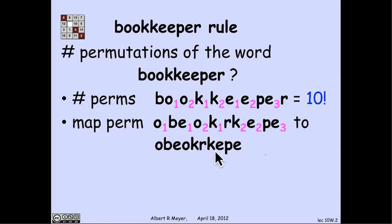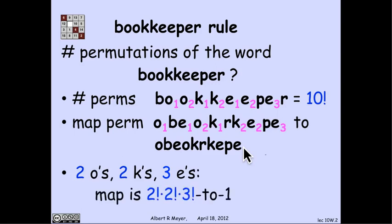Subscripts on the e's don't matter. Three factorial possible orders that the subscripts might occur in the e's. The net result is that with two o's, two k's, and three e's, the mapping is 2 factorial by 2 factorial by 3 factorial to 1. And that instantly gives us, by the division rule, that the total number of permutations of the letters in the word bookkeeper is 10 factorial over 2 factorial times 2 factorial times 3 factorial.